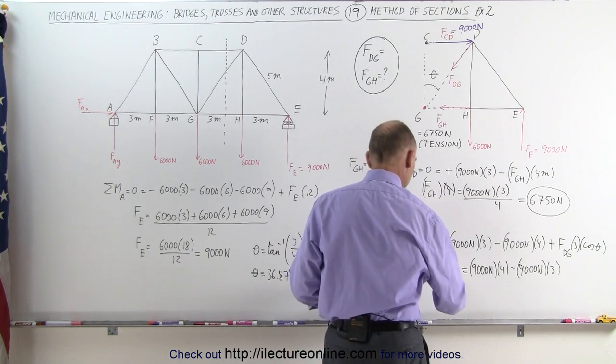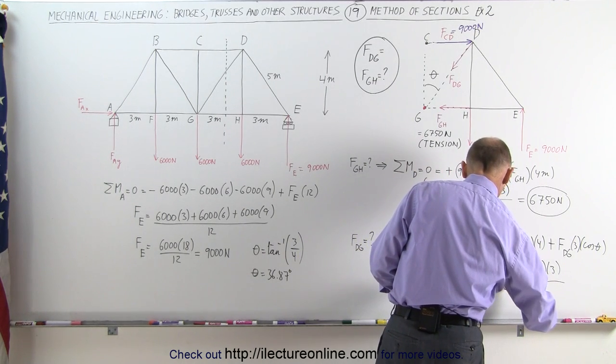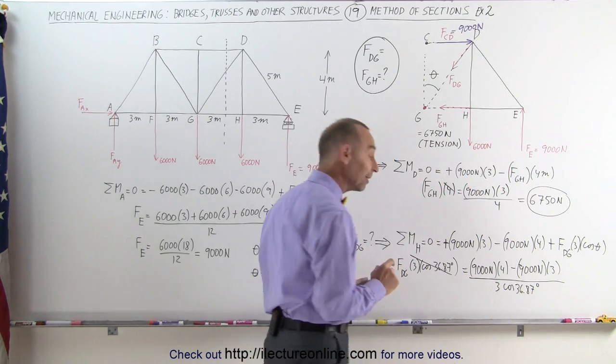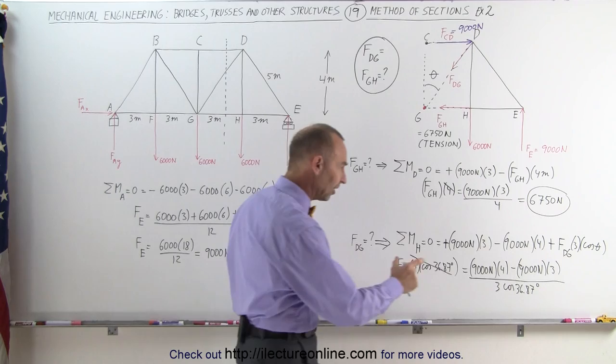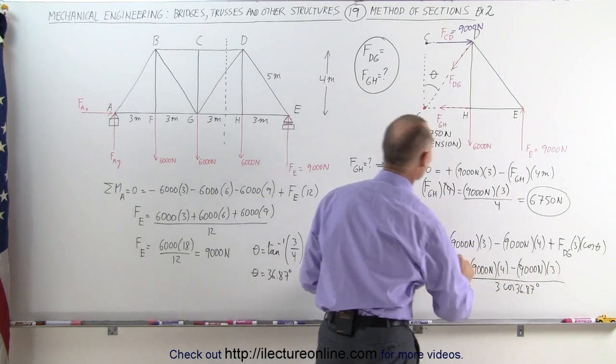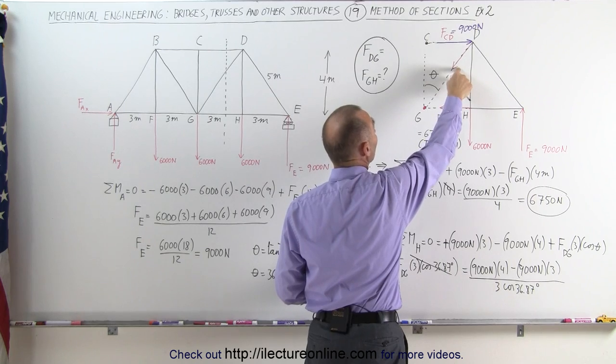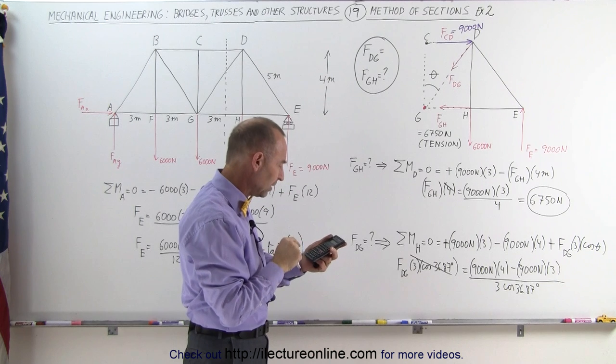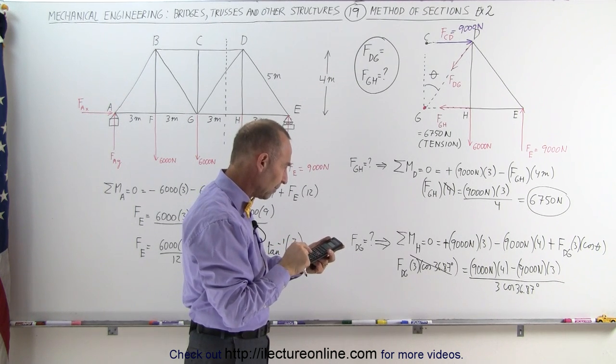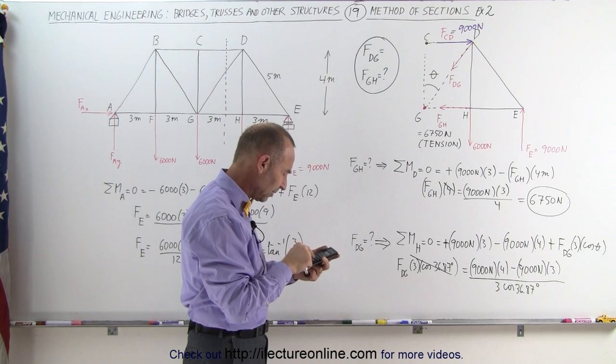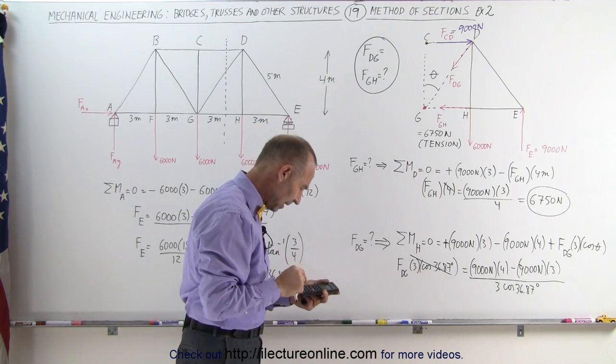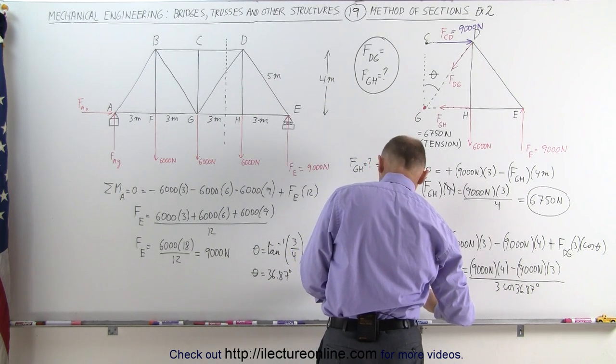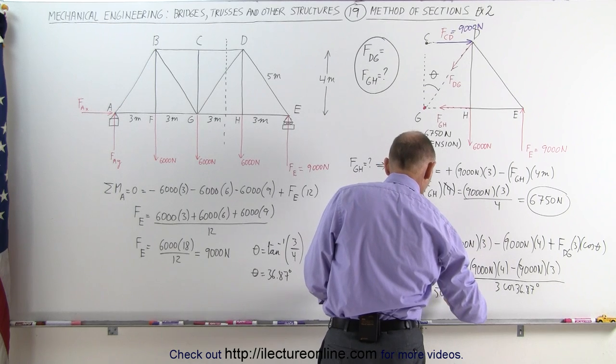And now when we divide both sides by 3 times the cosine of 36.87 degrees, I can finally find the force between D and G. Notice it looks like I'm going to get a positive quantity. This is bigger than this. It's a positive quantity which means that this will also be a member under tension. That gives us 9,000 in the numerator, divided by 3, and divided by cosine of 36.87 degrees. And I get a total of 3,750 newtons. So the force on DG is a positive 3,750 newtons.